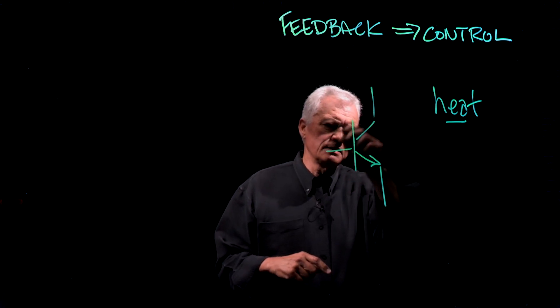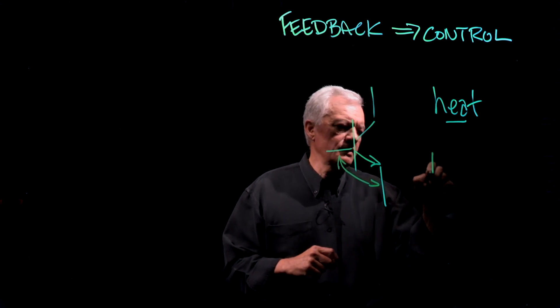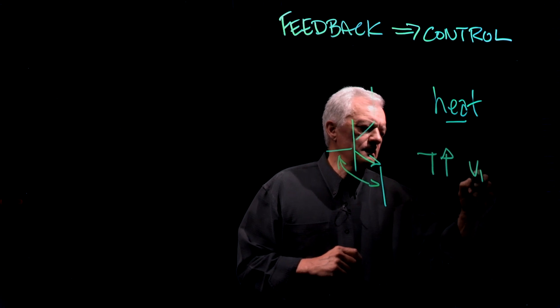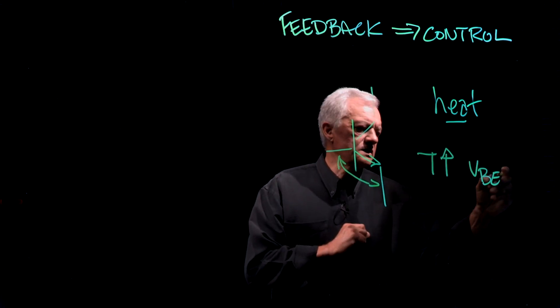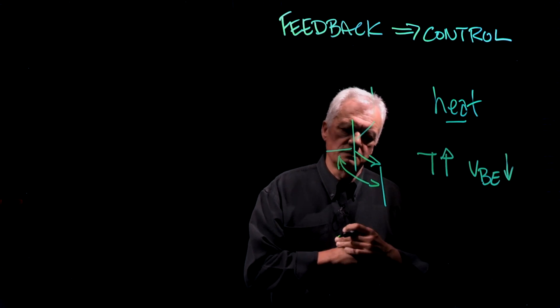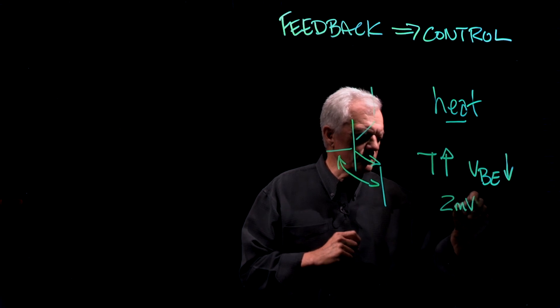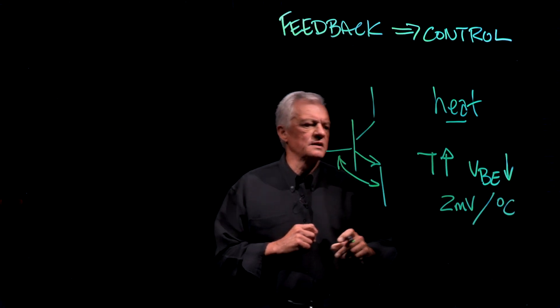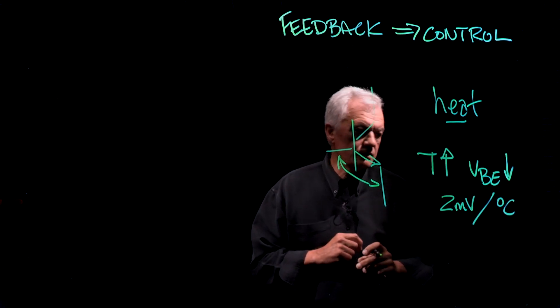In silicon, just looking at this device here, as you apply heat, so let's go this way, temperature will go up. The voltage across that particular junction will actually go down. In fact, it is a number of 2 millivolts per degree Celsius. For every increase in T, your voltage will go down by 2 millivolts.